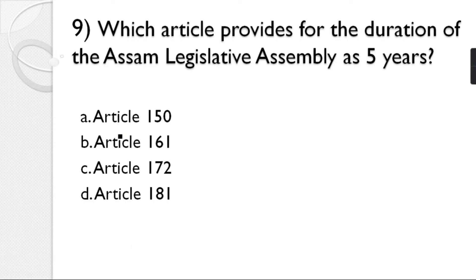Question number 9: Which article provides for the duration of the Assam Legislative Assembly as 5 years? Options: Article 150, Article 161, Article 172, Article 181. The correct answer is option C — Article 172.